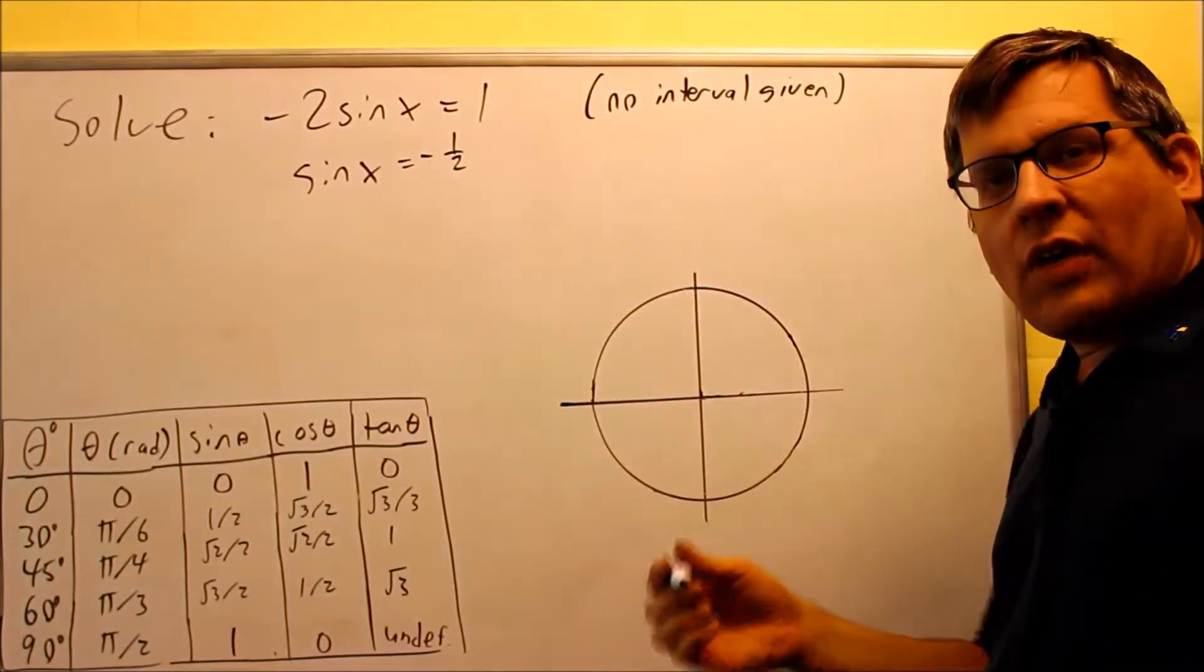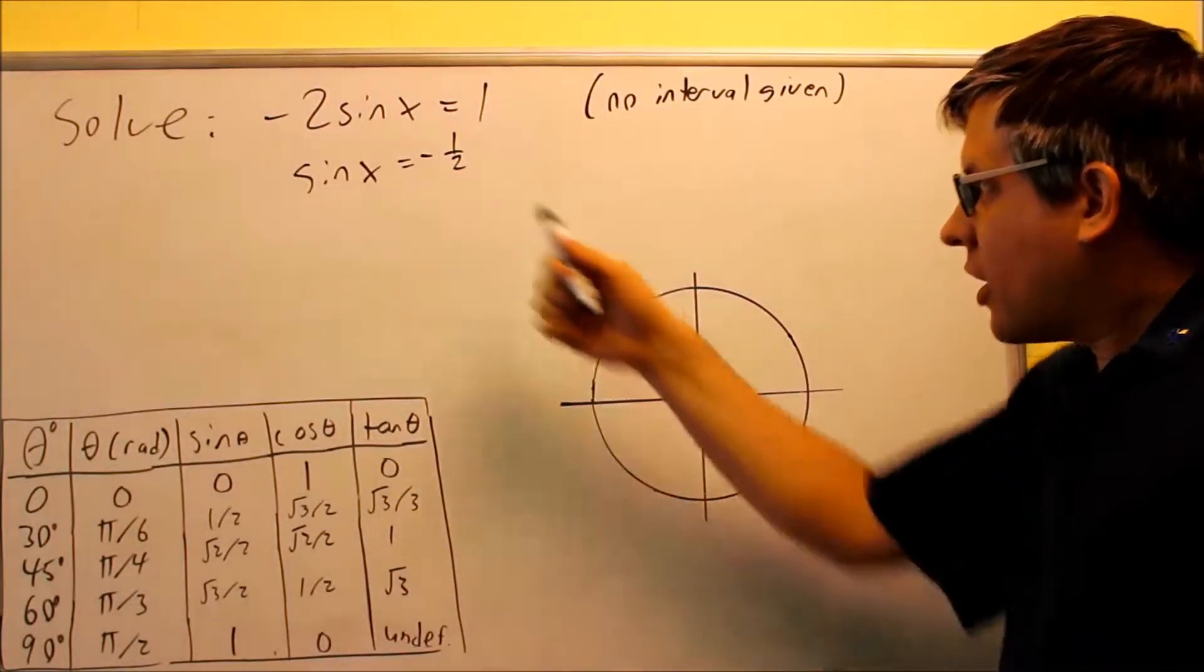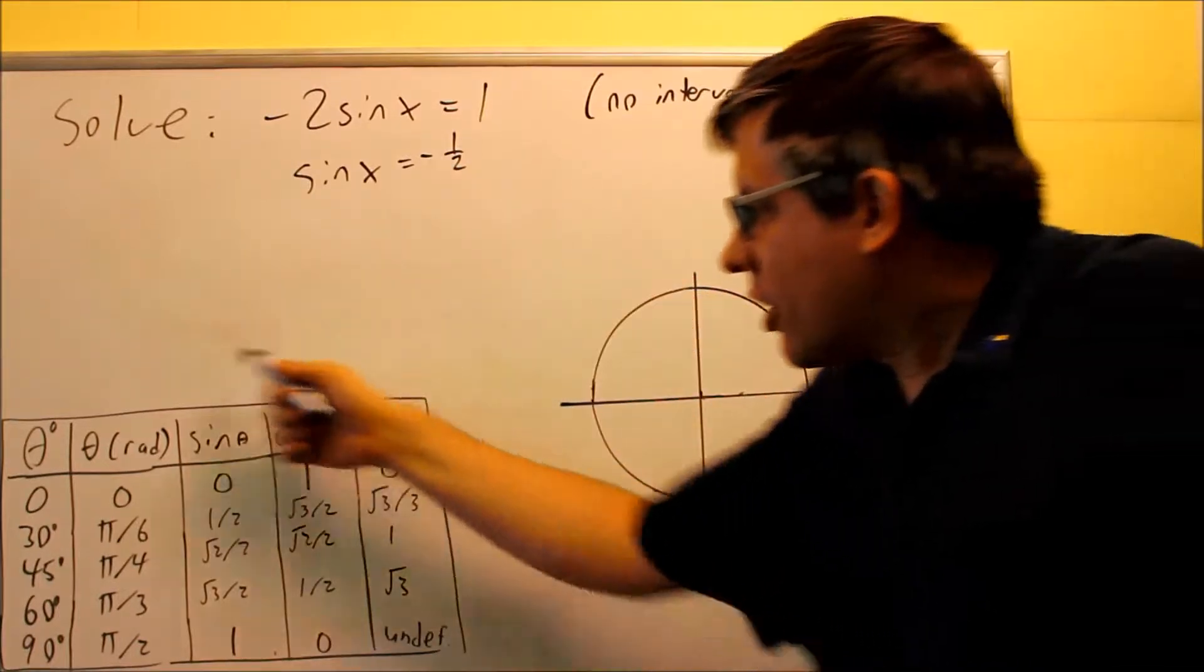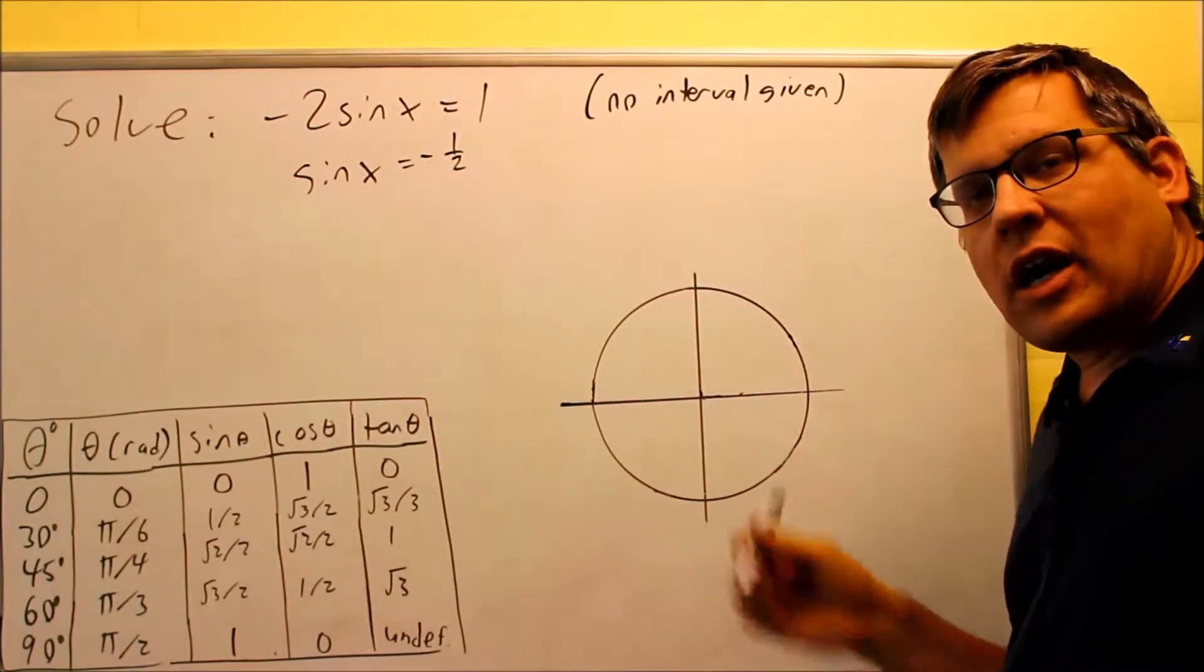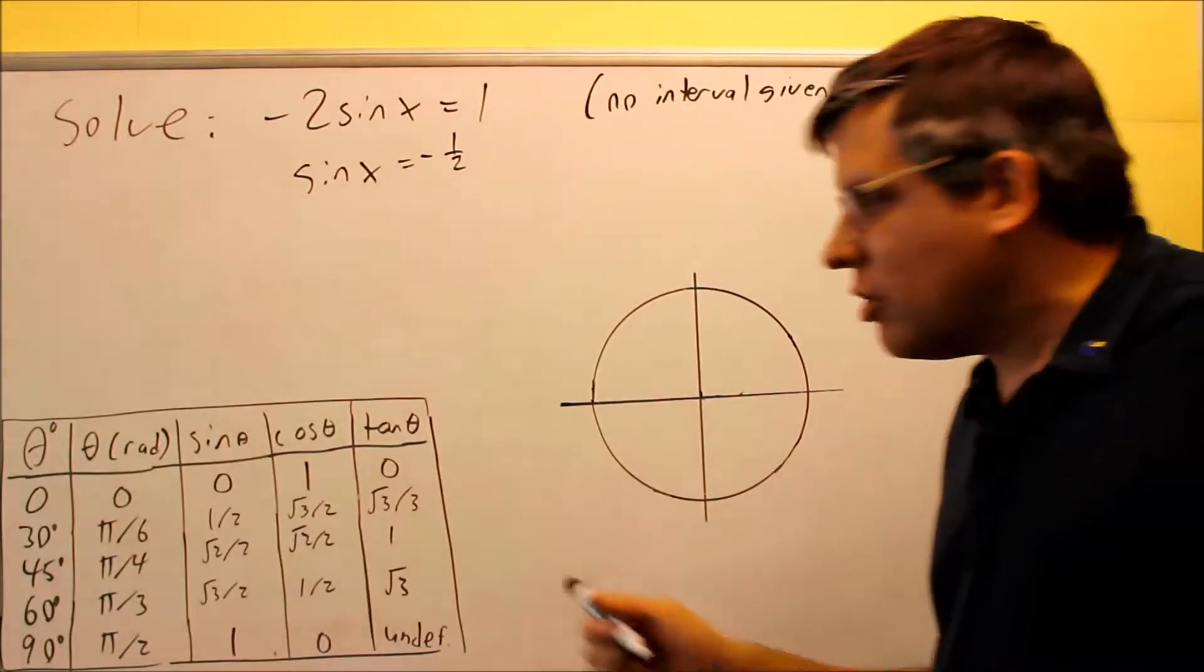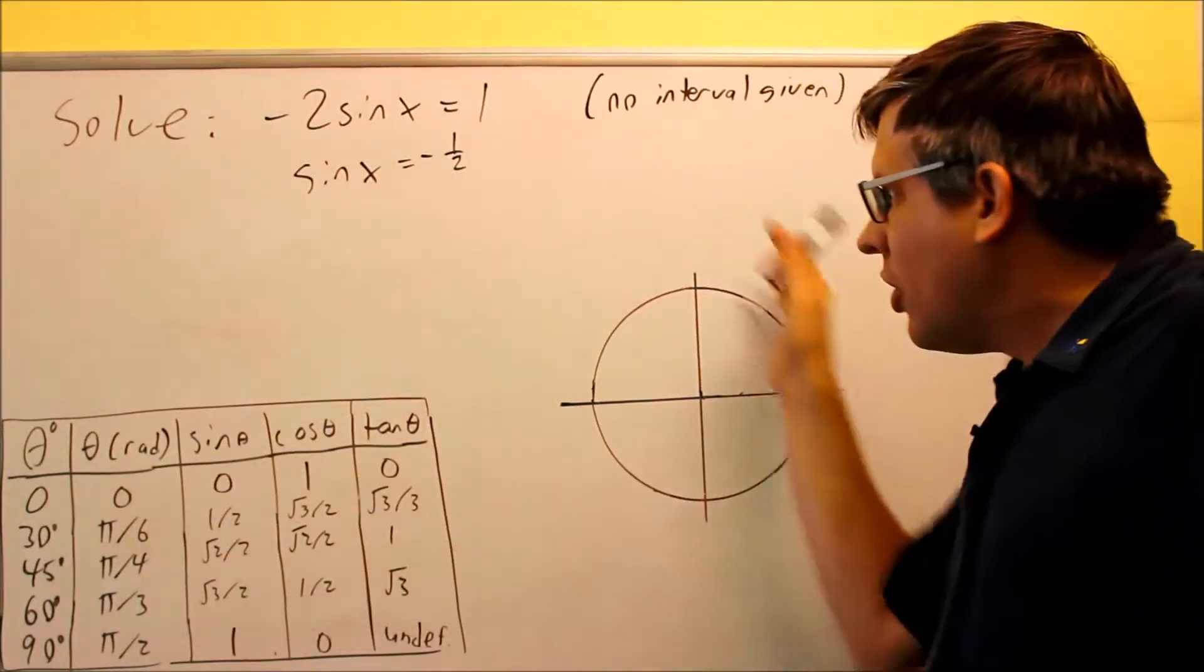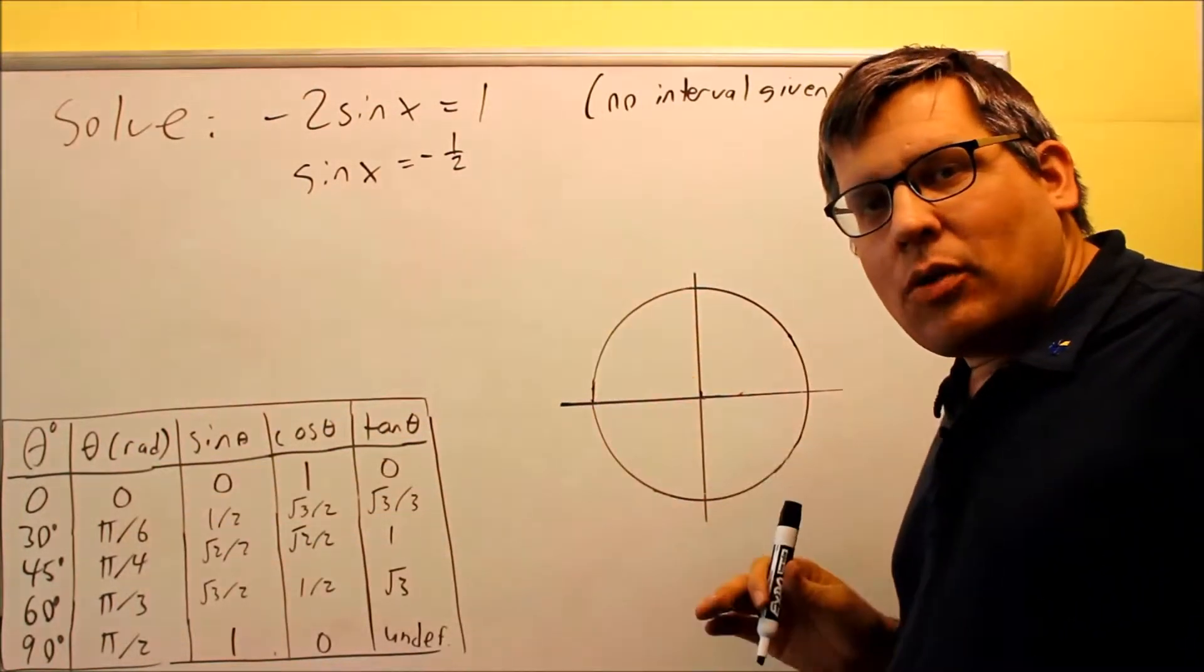Now this time we have a negative angle, or negative value. If you look at the table, we don't have any negative values on there. However, that's okay because we can still use the table itself in order to get all the answers for this question.